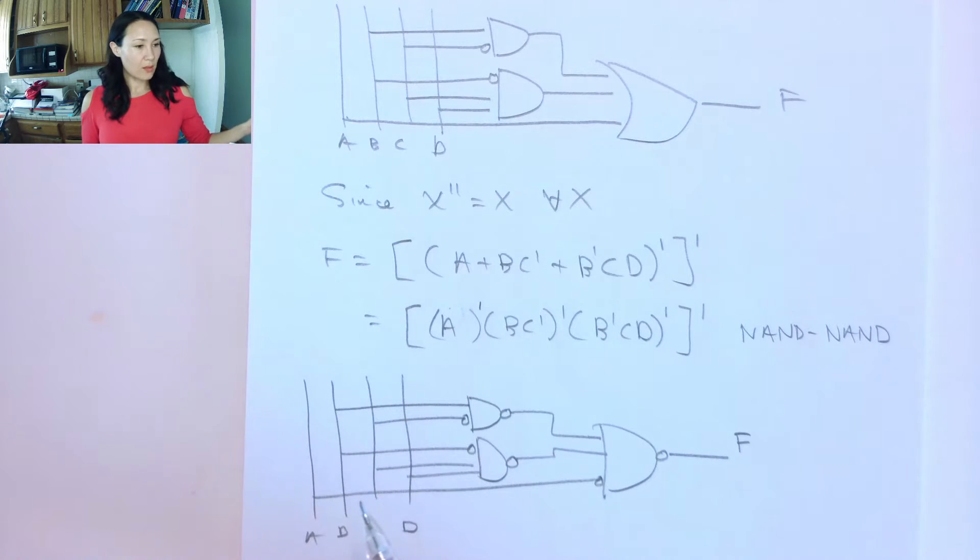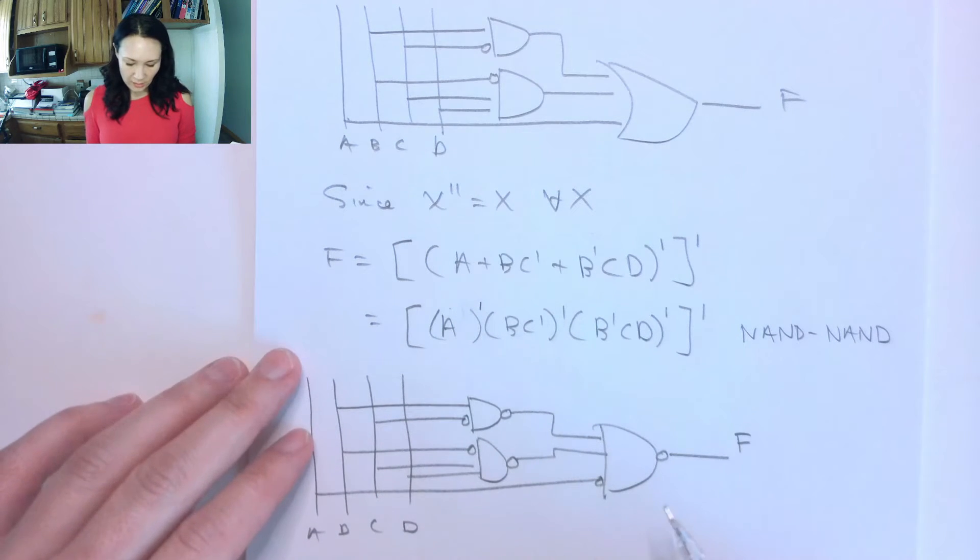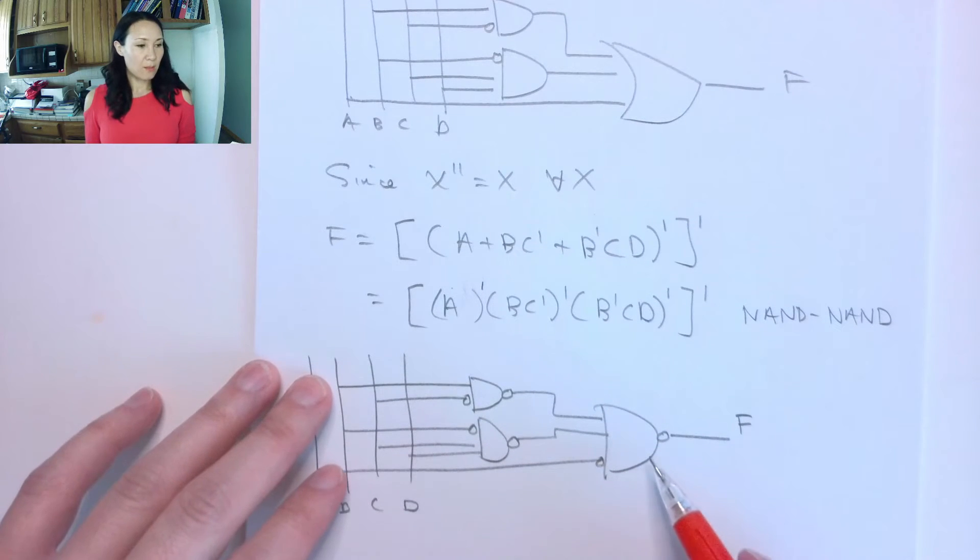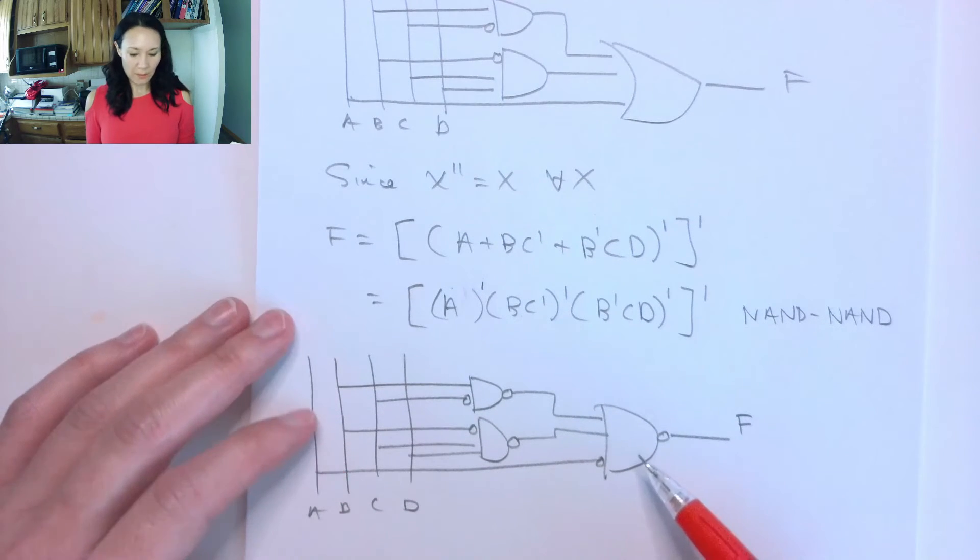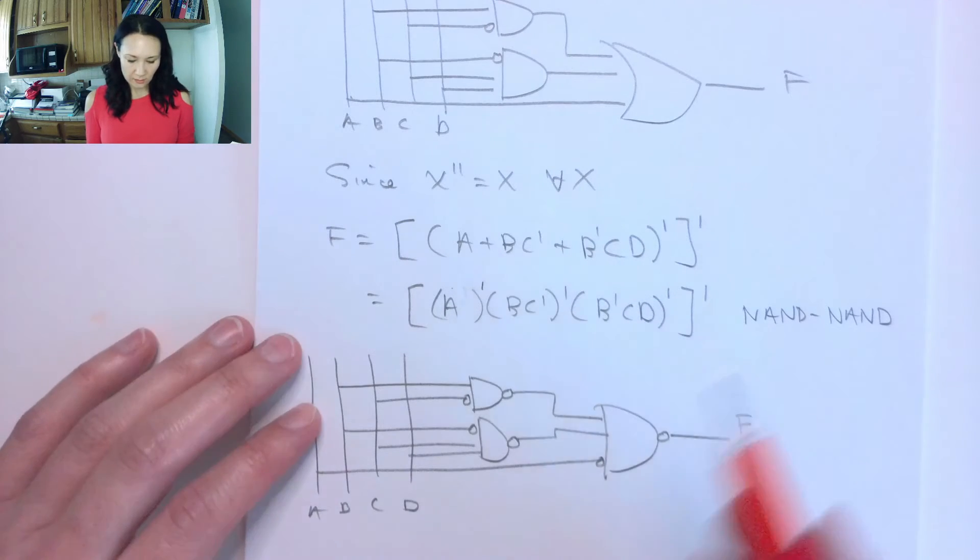This is still a two-level circuit. So now I can actually continue with this simplification. Suppose now I want to apply De Morgan's to the inside of these functions.